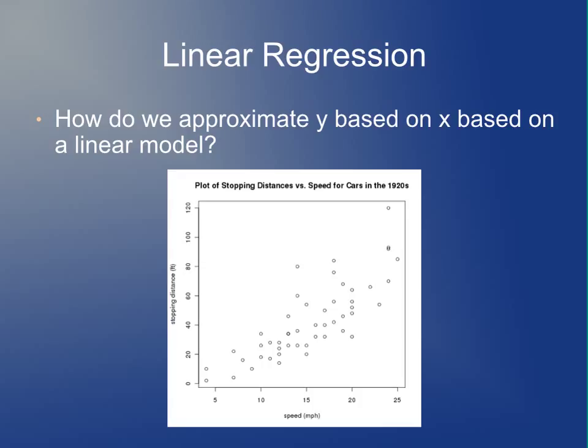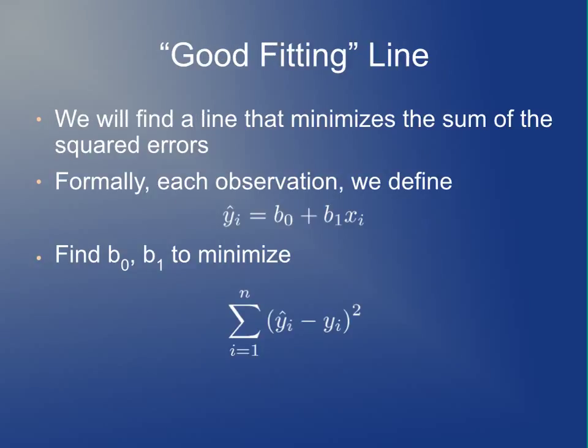So let's say we want to model y based on x using a linear model. Going back to the cars example, we want to predict the stopping distance based on the speed when you jam on the brakes, and we want to find the best possible fitting line to that data set. Conventionally, this is done by finding a line that minimizes the sum of the squared errors.